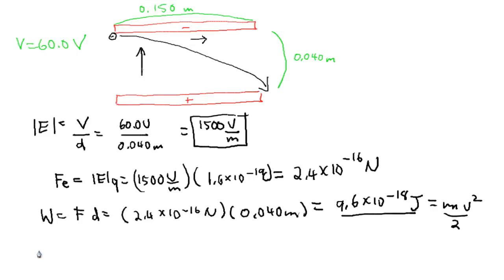And when we solve for v, we have the root of 2 times 9.6 times 10 to the negative 18, over the mass of the electron which is 9.1 times 10 to the negative 31. If you plug that into the calculator, we get a value of 4.6 times 10 to the 6 meters over second.